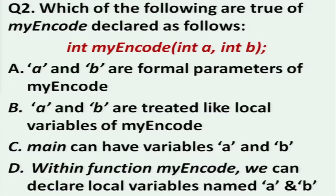We move on to the next question. Which of the following are true of myencode, declared in the same way as in the previous question? A and B are formal parameters of myencode. A and B are treated like local variables of myencode. Main can have variables A and B. And within function myencode, we can declare local variables named A and B. One minute to answer that question and then we'll move on to the next one.